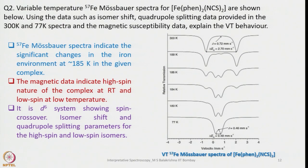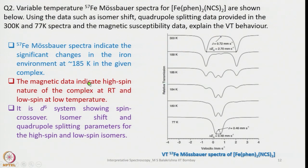A variable temperature 57Fe Mössbauer spectra question involves a bis(phenanthroline)(NCS)₂ iron complex in octahedral geometry, with spectra recorded from 77 K to 300 K. Using isomer shift and quadrupole splitting data at 300 K and 77 K along with magnetic susceptibility data, the Mössbauer spectra show significant changes in the iron environment around 185 K. The magnetic data indicate high spin character at room temperature and low spin at low temperature — it is a d⁶ system showing spin crossover, with isomer shift and quadrupole splitting parameters distinguishing the high spin and low spin isomers.